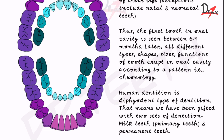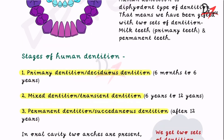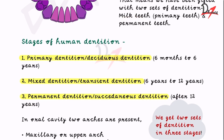Diphyodont means we have been gifted with two sets of dentition — we have the milk teeth and we have the permanent teeth. Milk teeth are named so because of the color of the tooth; the color is so white that it resembles milk, and not because they are made up of milk. So we have two sets of dentition.